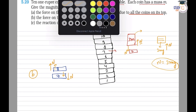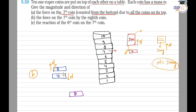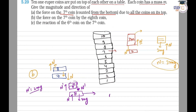Considering the eighth coin, its FBD has two forces: its weight mg downward, and a contact force N from below (from the seventh coin) upward. Additionally, coins nine and ten impart a force N' downward on the eighth coin. Since coins nine and ten are balancing the mass of two coins, N' is equal to 2mg. Therefore, for the eighth coin: N = N' + mg = 2mg + mg, which gives N equal to 3mg.